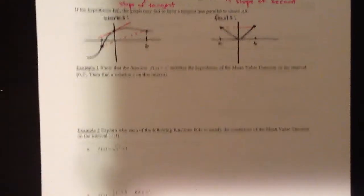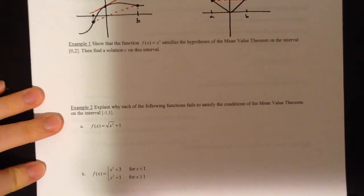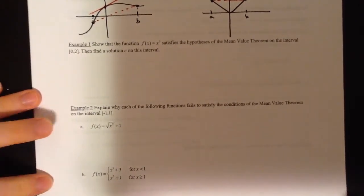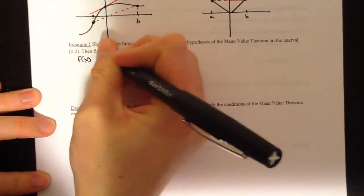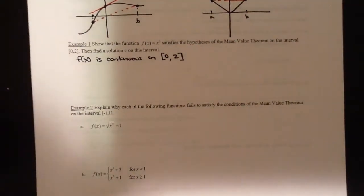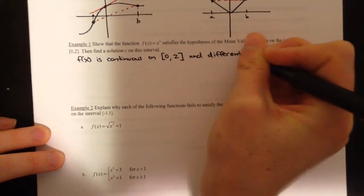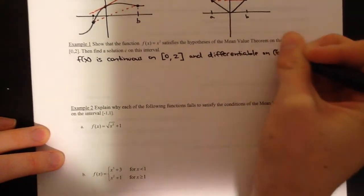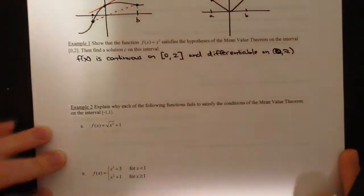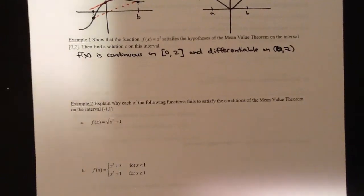Example 1: we want to show that this function satisfies the hypotheses of the mean value theorem. The hypotheses are that it's continuous and differentiable, and we have to state that to use the MVT — the AP test will require that. We can say f(x) is continuous on the closed interval from 0 to 2, and differentiable on the open interval from 0 to 2. The function is x squared, a polynomial — perfectly continuous. Its derivative is 2x, which has no issues at any point.